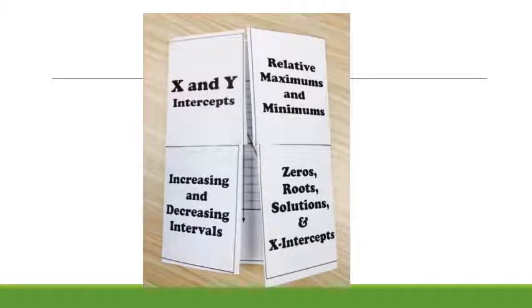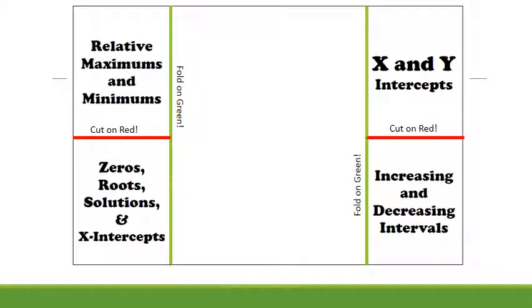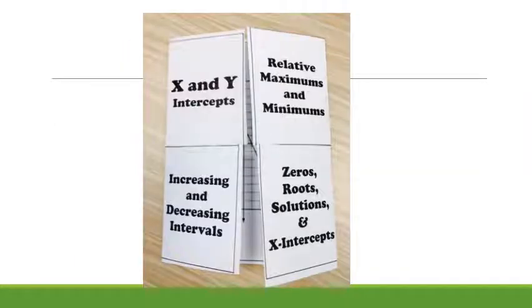Here's the foldable that you have available to you. You want to cut along where I have the red lines and fold along where I have the green lines. The goal is so that it looks like this - it'll be a little book so you can just flip open. So if you have a question about increasing and decreasing intervals, you can just pop that open for the notes. So take some time to cut along those lines and fold along those lines.